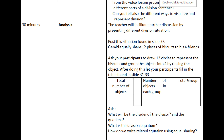For the analysis, the teacher facilitates further discussion by presenting different division situations. In slide 32: Gerald equally shared 12 pieces of biscuits to his four friends. Ask participants to draw 12 circles to represent the biscuits and group the objects into four by circling them. Then fill in the table showing total number of objects, number of objects in each group, and total groups. Then ask: what is the dividend, divisor, quotient, the division equation, and how to write the related equation using equal sharing.